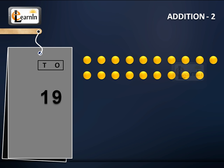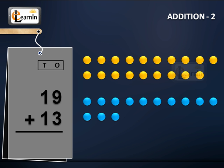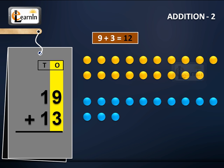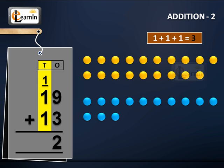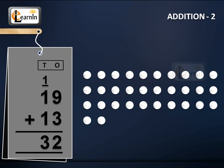19 plus 13. Adding the digits in the ones place, 9 plus 3 equals 12. Carrying the 1 from 12 to the tens place, we get 1 plus 1 plus 1 equals 3. Therefore, 19 plus 13 equals 32.